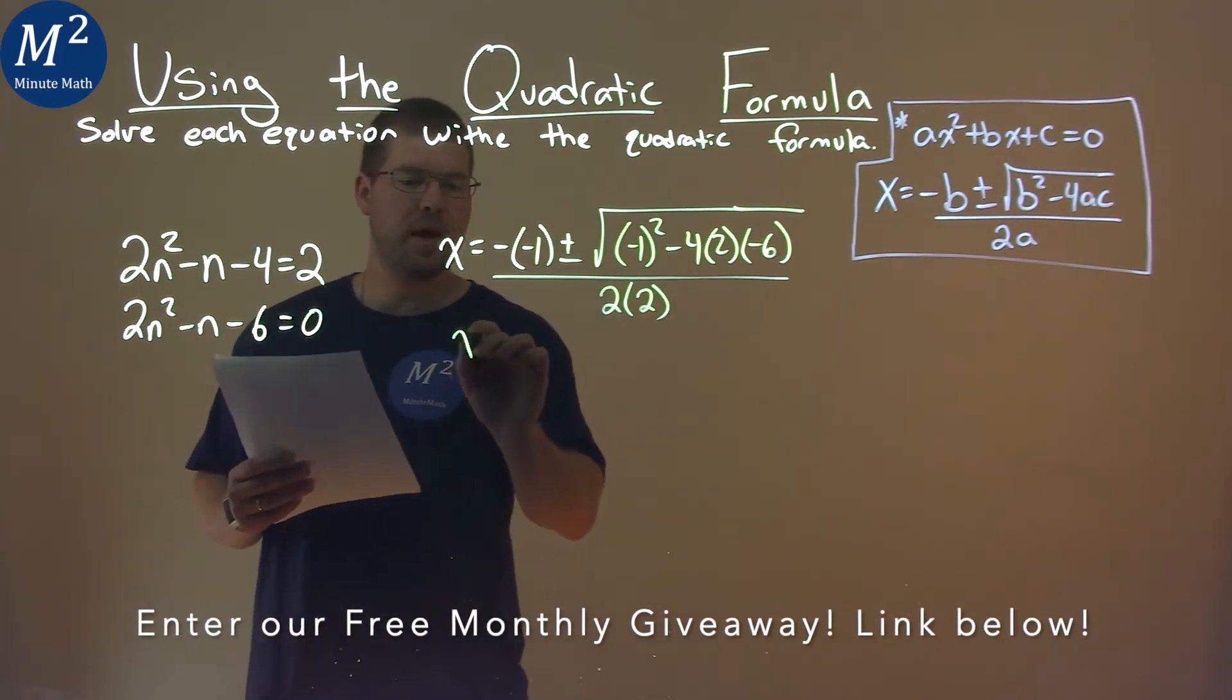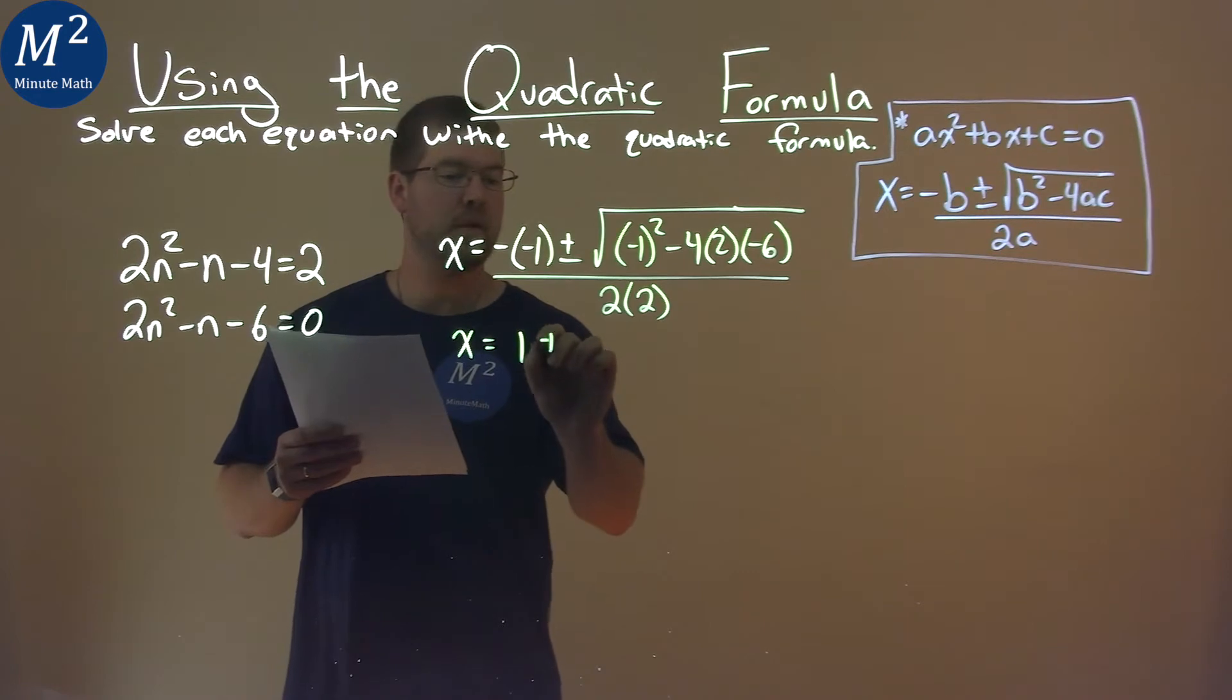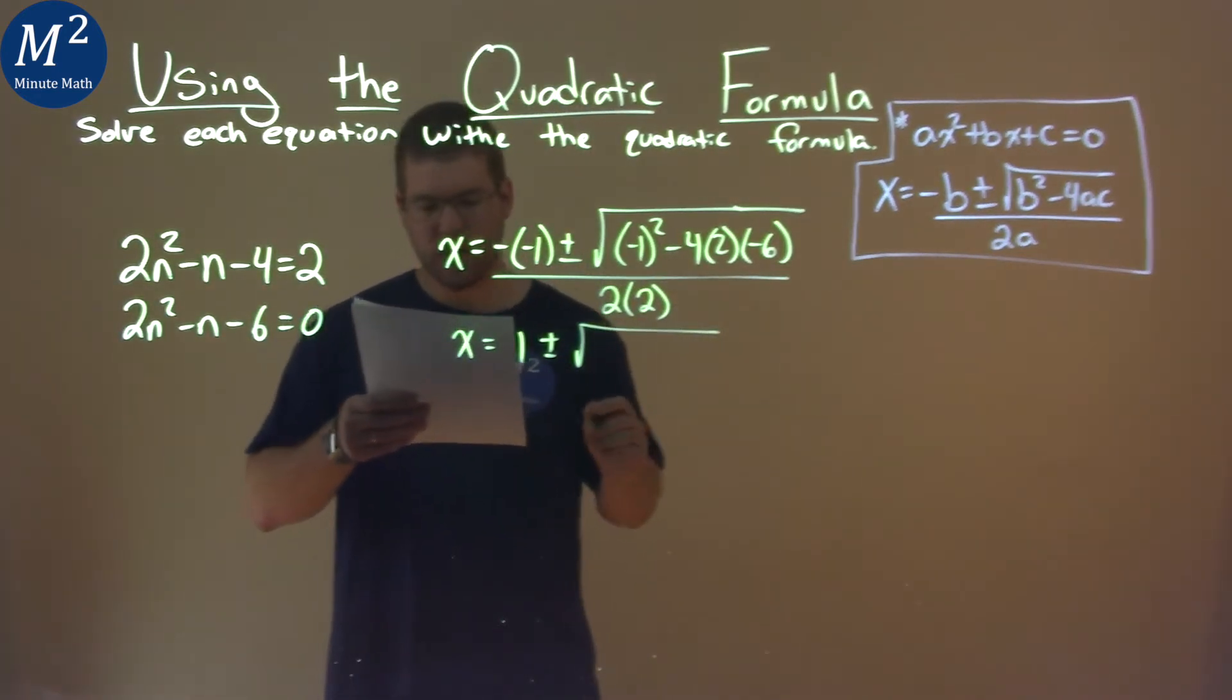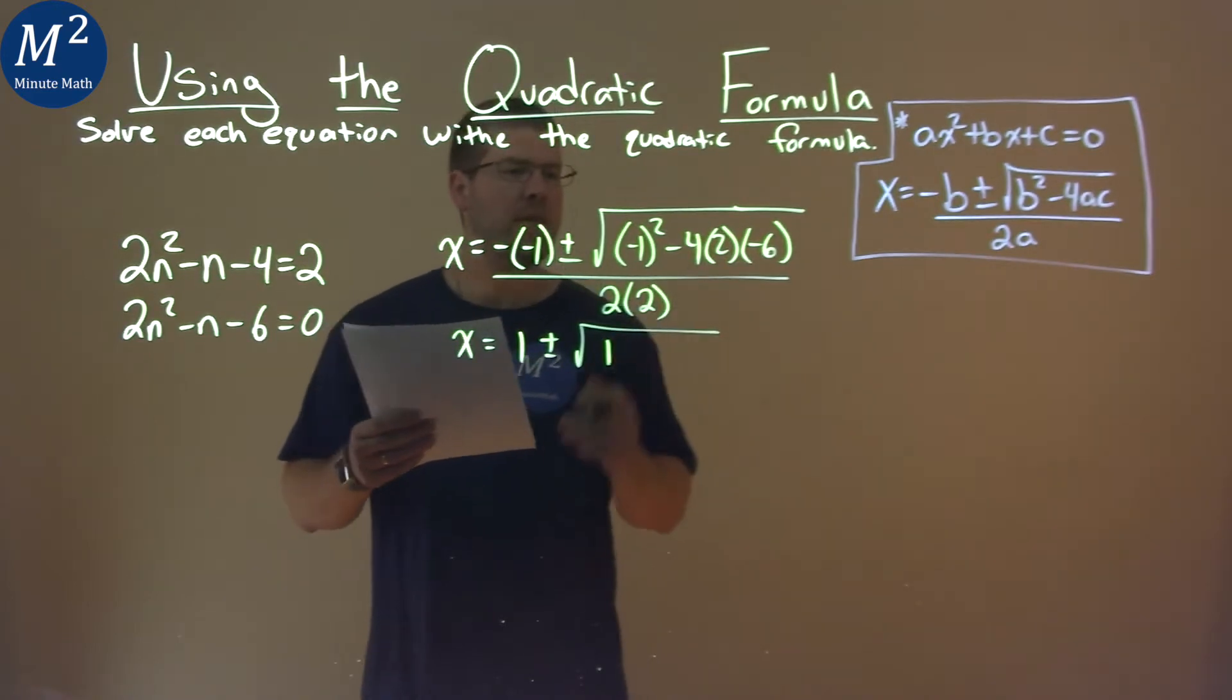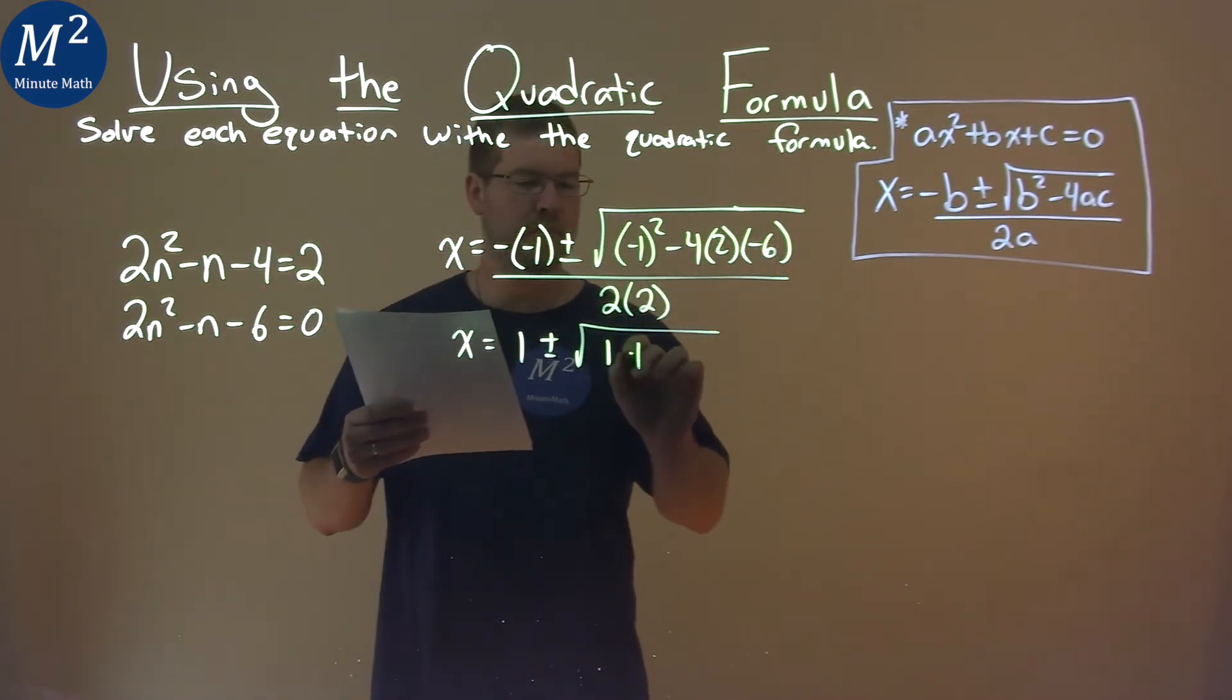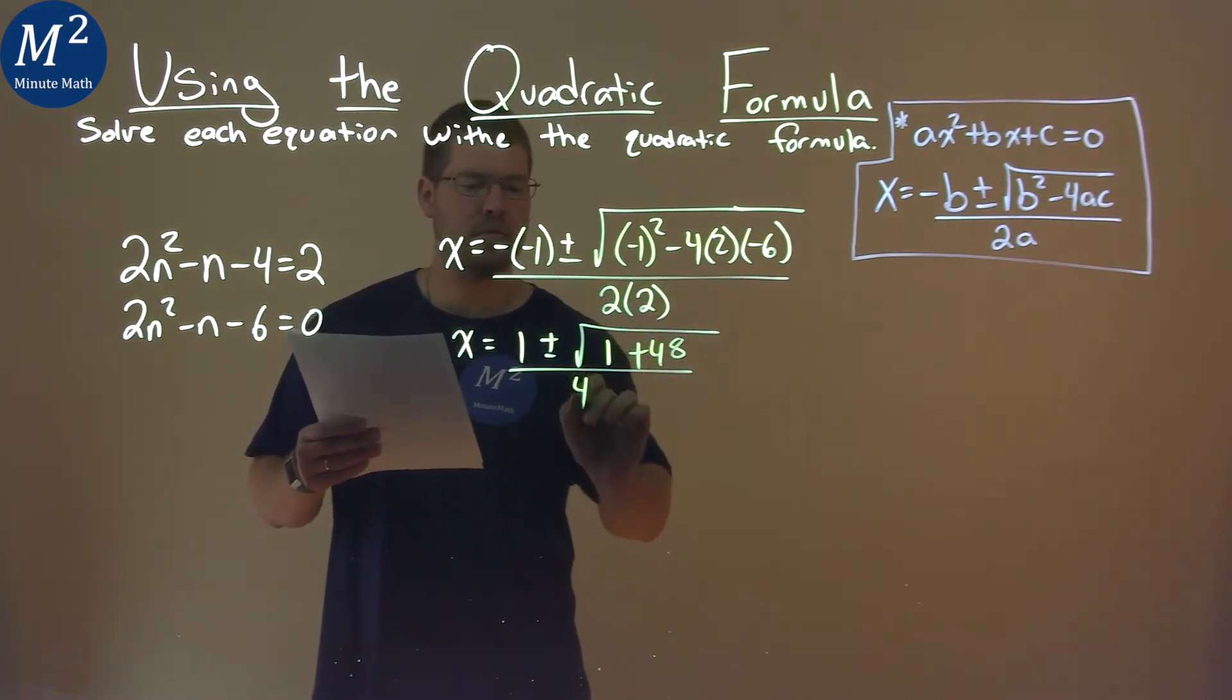Now from here, x equals - well negative negative 1 is positive 1. Plus or minus the square root, let's take our time. (-1)² is positive 1. And then minus 4 times 2 times -6 is positive 48. All over 2 times 2, which is 4.